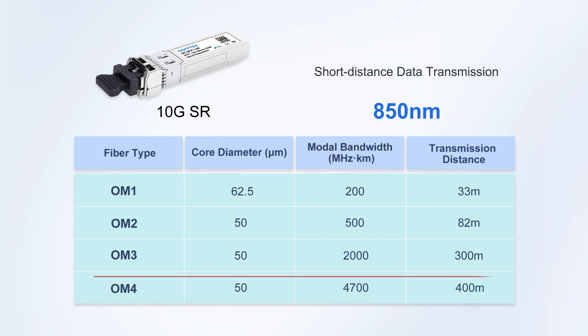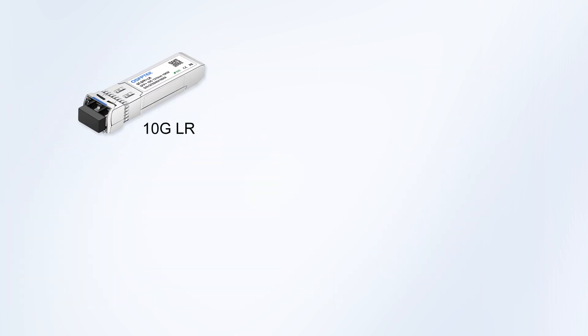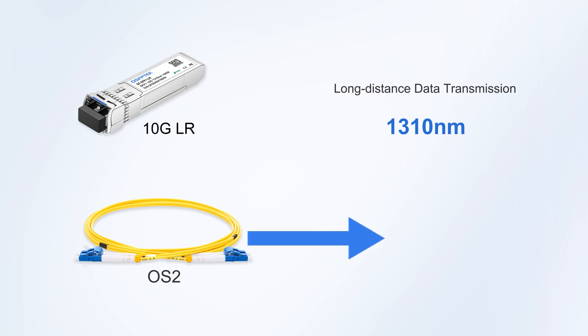OM4 gives the best performance, up to 400 meters. On the other hand, the 10G-LR module is made for long-distance transmission. It uses a 1310nm wavelength over OS2 single-mode fiber and can reach up to 10 kilometers.